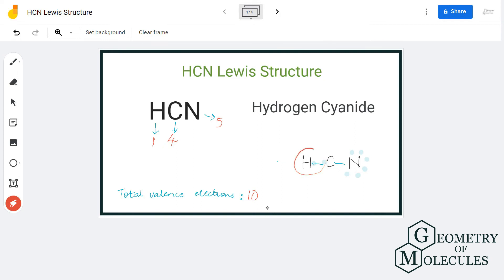Here hydrogen has two valence electrons which means it has a complete stable structure. Carbon has four valence electrons as it is sharing two of its electrons with hydrogen and nitrogen. And nitrogen has eight valence electrons which means nitrogen has a complete octet.